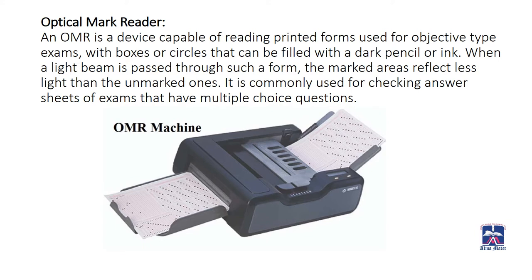Fourth, we have the optical mark reader. An OMR is a device capable of reading printed forms used for objective-type exams with boxes or circles that can be filled with a dark pencil or ink. When a light beam is passed through such a form, the marked areas reflect less light than the unmarked ones. It is commonly used for checking answer sheets of exams that have multiple choice questions — the area you have marked reflects less light than the area that is unmarked.